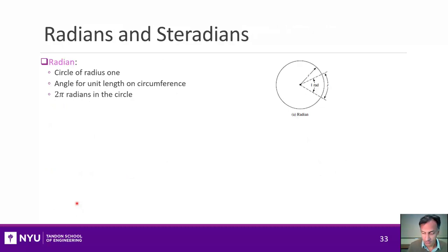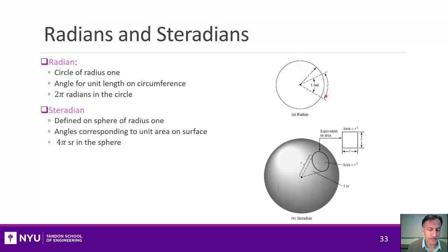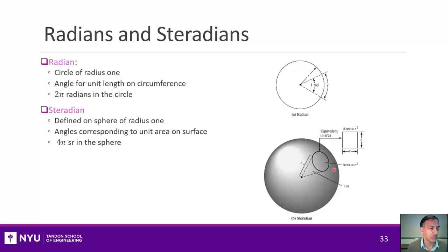With that review of spherical coordinates, let's talk about radians and steradians. A radian is defined on a circle of radius one — the circumference is two pi radians, standard geometry. The steradian generalizes that to a sphere of radius one, defined as the angles corresponding to a unit area on that surface. There are four pi steradians in a full sphere — it's a measure of the total angular space occupied by some surface.